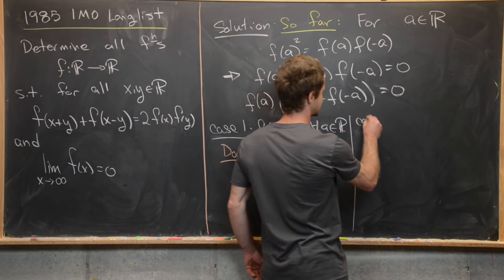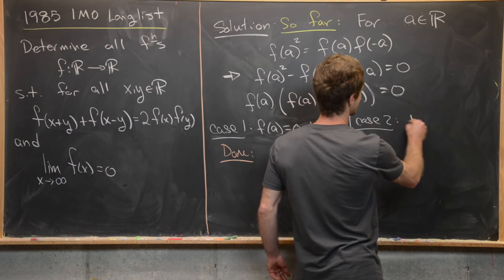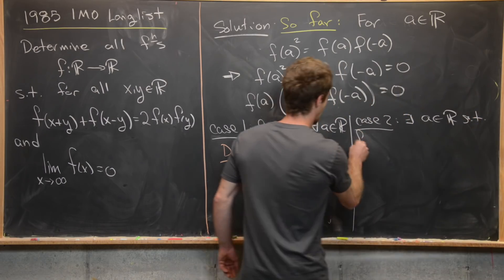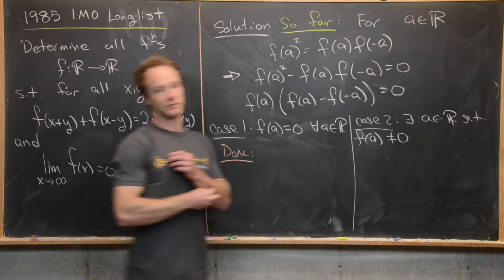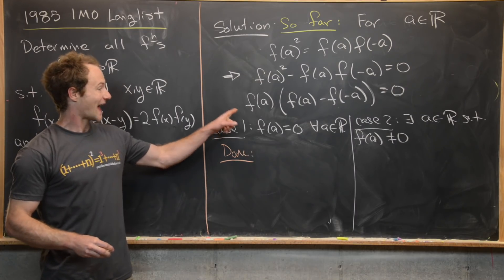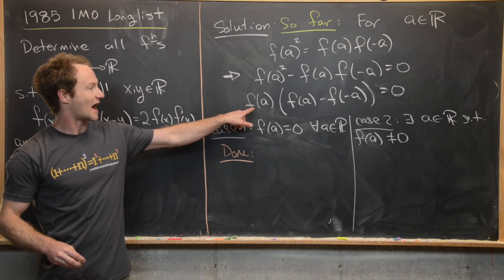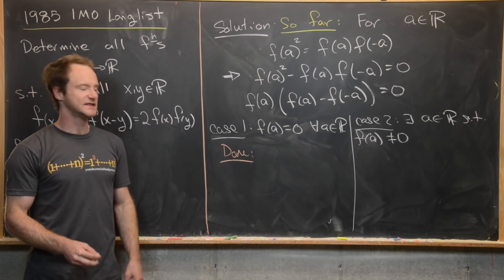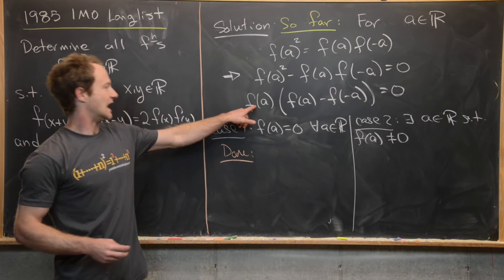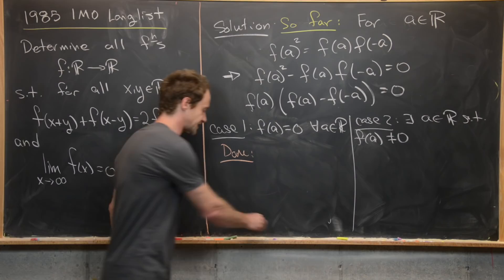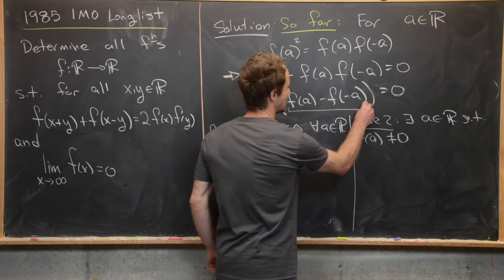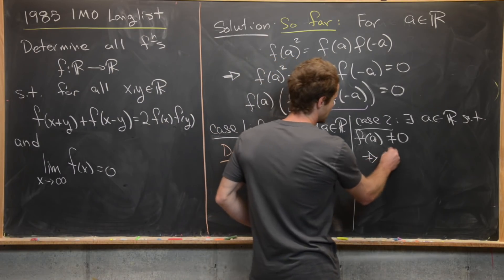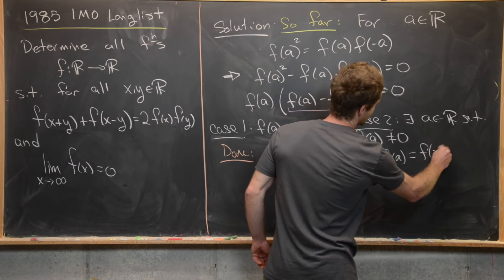So we'll move on to the second case. Case two, there exists some real number a such that f(a) is not equal to zero. But what that tells us is that we can divide both sides of this equation by f(a). So if f(a) is not equal to zero, then it has a multiplicative inverse, which means that this bit must be equal to zero, the same thing as saying that f(a) = f(-a).